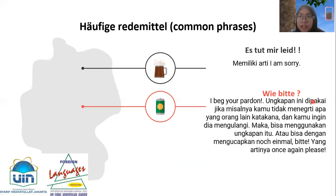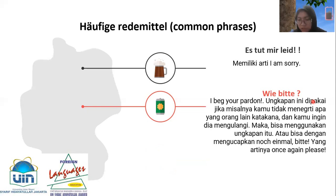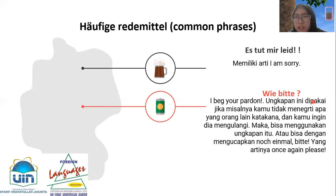'Entschuldige bitte' can also be used to ask for forgiveness. Besides that, when we want to apologize to someone, we can also say 'Tut mir leid' — the 'tut' is elongated — 'Tut mir leid', meaning 'I'm sorry'.